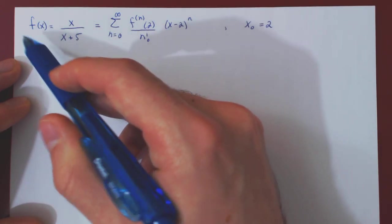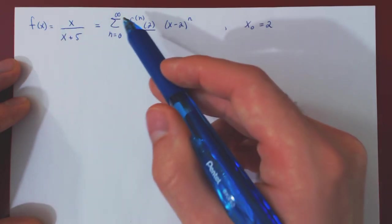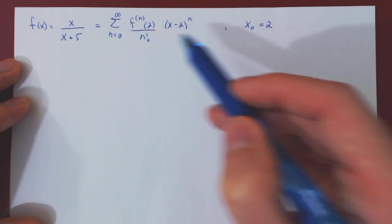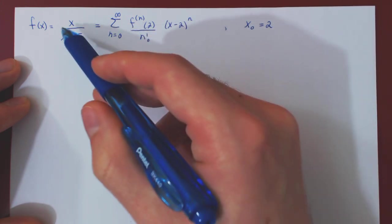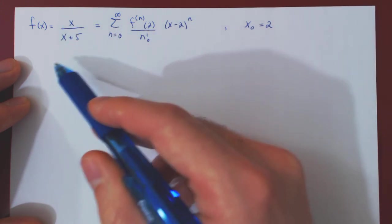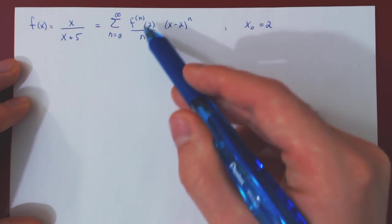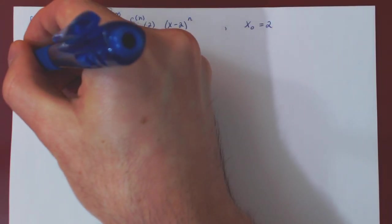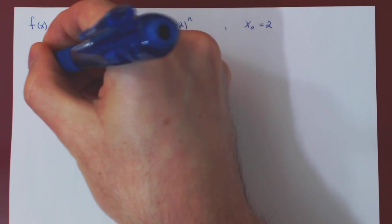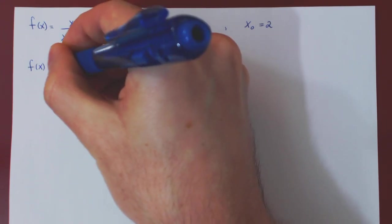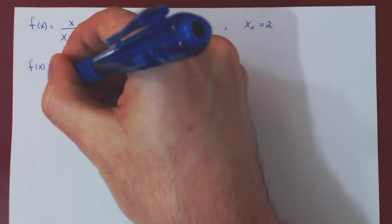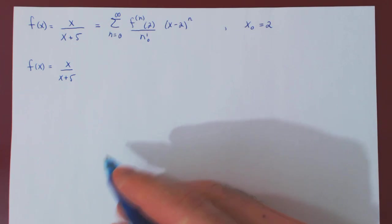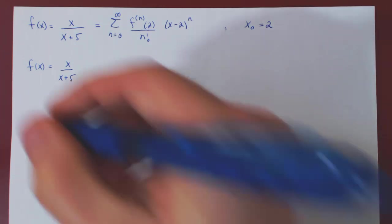To find the Taylor series of f of x, we need to find the higher derivatives at the center. So let's start taking higher derivatives of f, and hopefully we will see a pattern emerging. So f of x equals x over x plus 5 — this is the zeroth derivative. And now let's start differentiating.